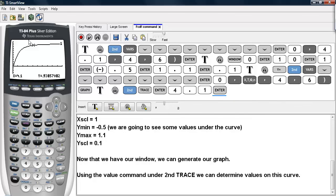And here we see the cursor highlighting the location on the curve, the x coordinate, and the y coordinate for this particular point. And this is how you can use the fcdf command on the TI-83/84 calculators.